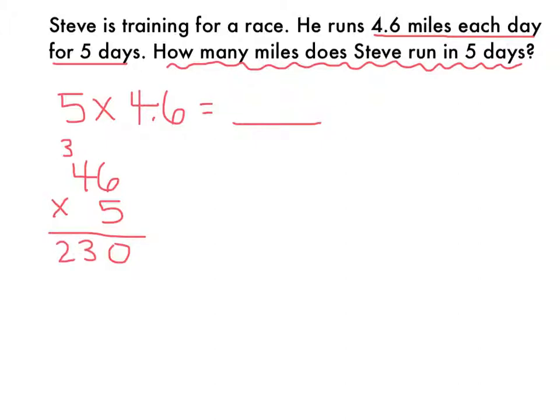Now, right now, my answer is 230. That does not make sense because I'm multiplying 5 times 4 and 6 tenths, so I need to account for the decimal places.